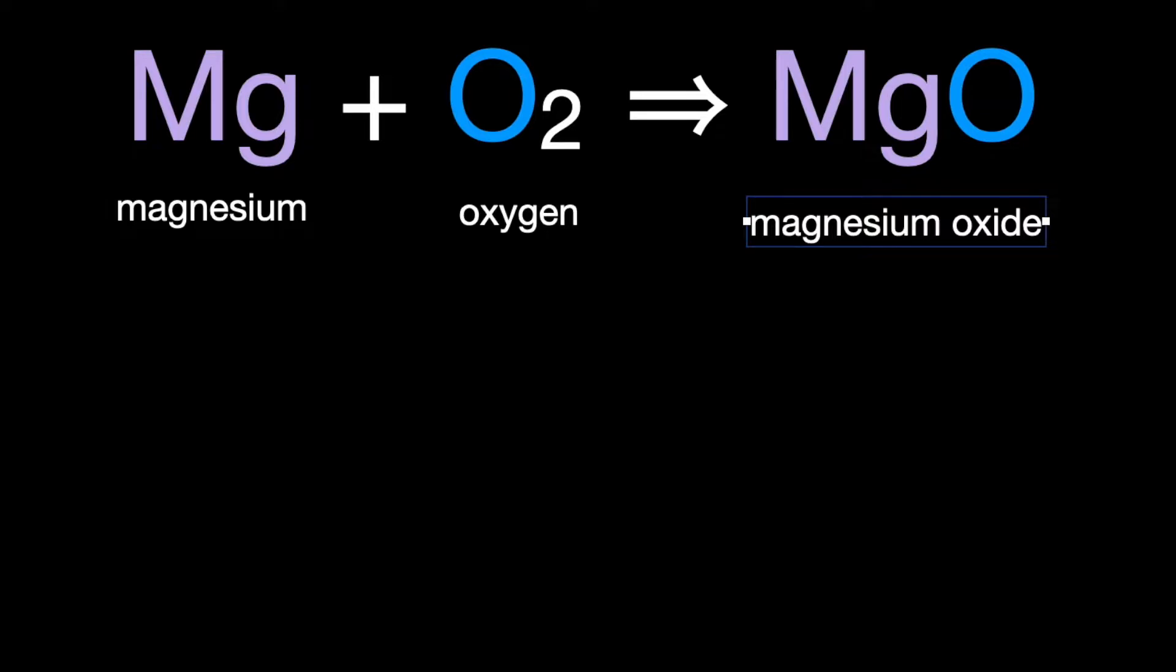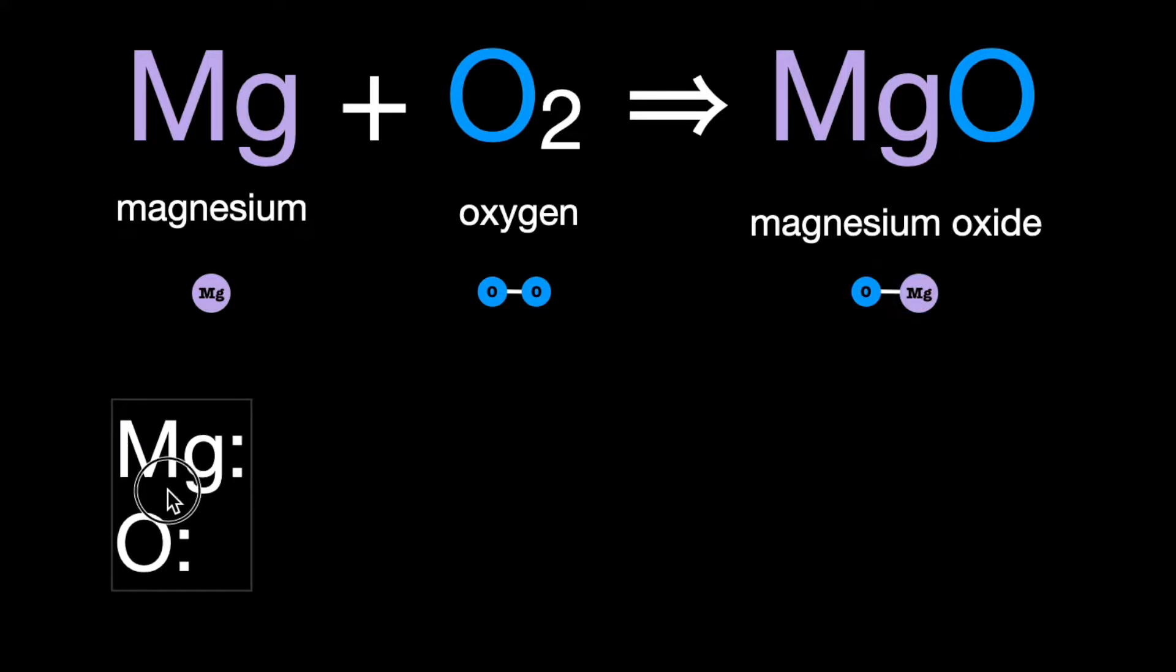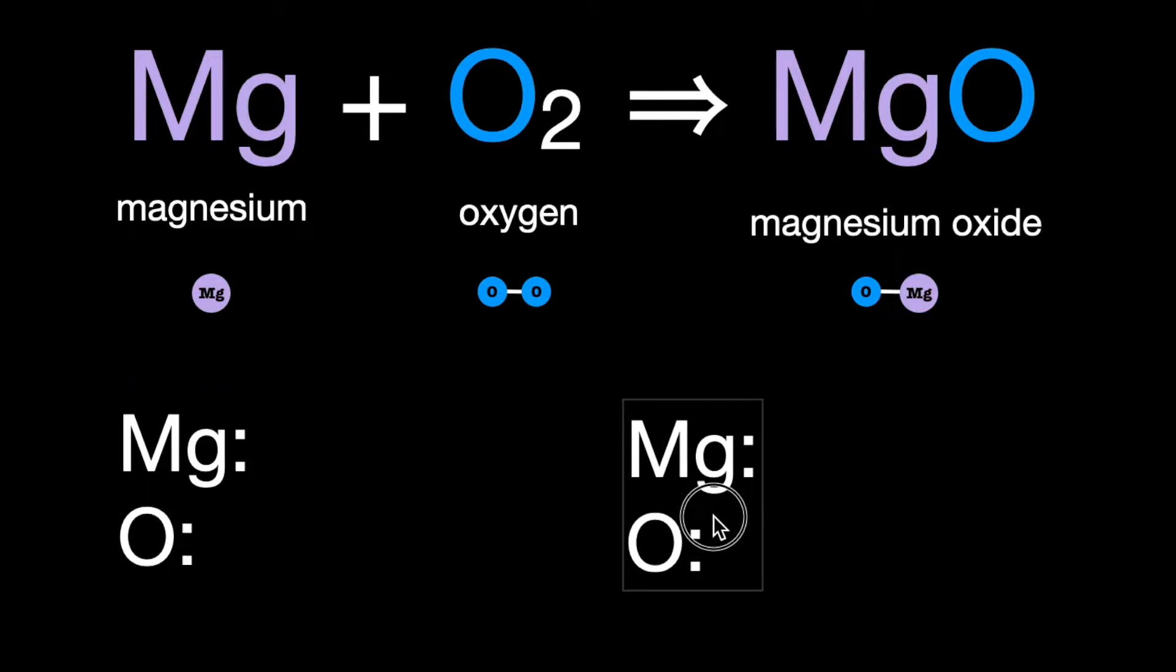And I like to do these visually, if you've seen these before. I like to show our molecules, in this case just an atom of magnesium, an O2, and then a molecule of magnesium oxide. So again, we need to balance what's happening on the left with what we are yielding on the right.